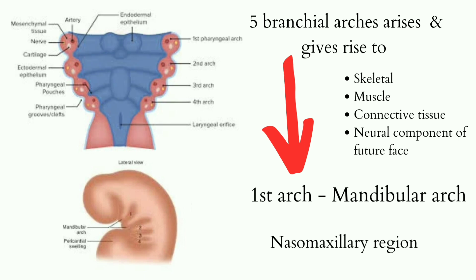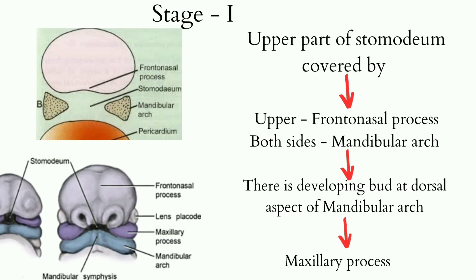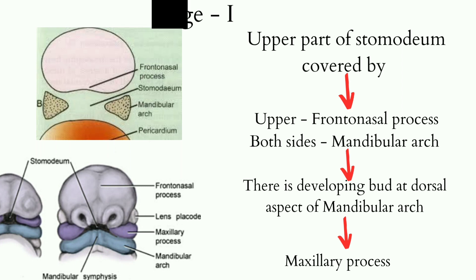The 1st branchial arch is called the mandibular arch and plays an important role in the development of the nasomaxillary region. In Stage 1, the upper part of the Stomodium is covered by the frontonasal process, and on both sides it is covered by the mandibular arch. There is a developing bud at the dorsal aspect of the mandibular arch, which is nothing but the maxillary process.